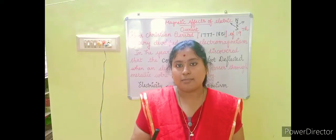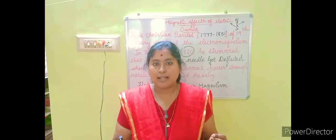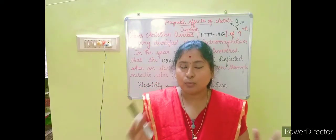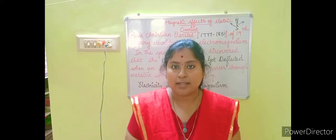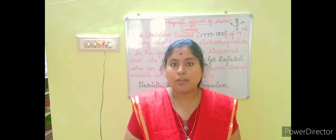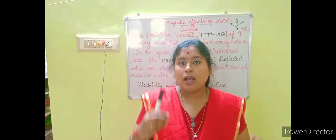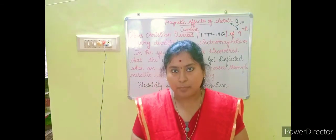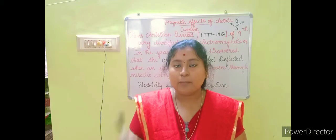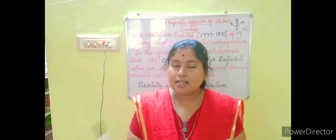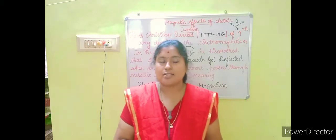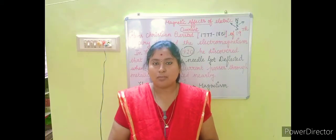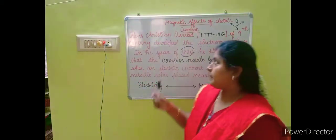From the name itself you can understand — electricity and magnetism. Both these phenomena combine together to produce the concept of electromagnetism. The electricity concept depends upon magnetism, and same way magnetism depends upon electricity. All these together combine to give you the concept of electromagnetism.